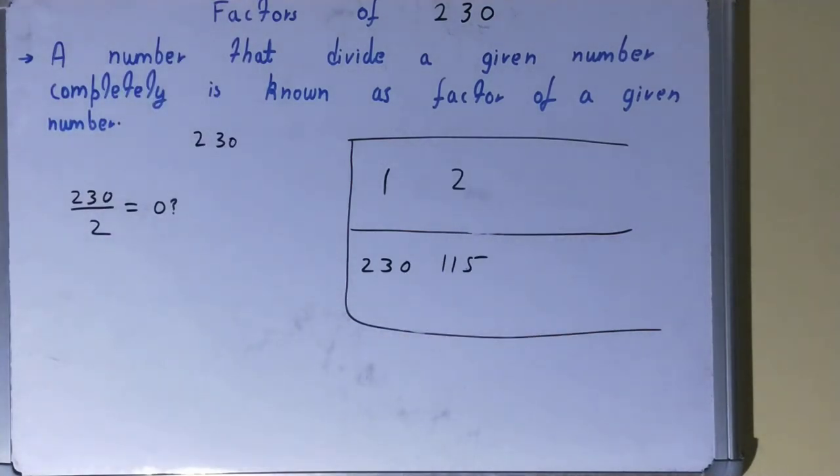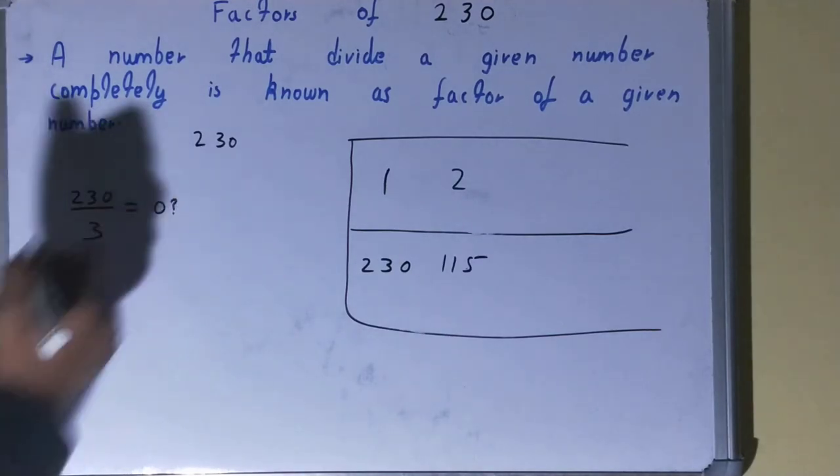the factor and 115 will also be the factor. After 2, we'll check with 3. 3 sevens are 21, 2-zero, not possible. Let's check with 4. 4 fives are 20, 3-zero, not possible. Let's check with 5.